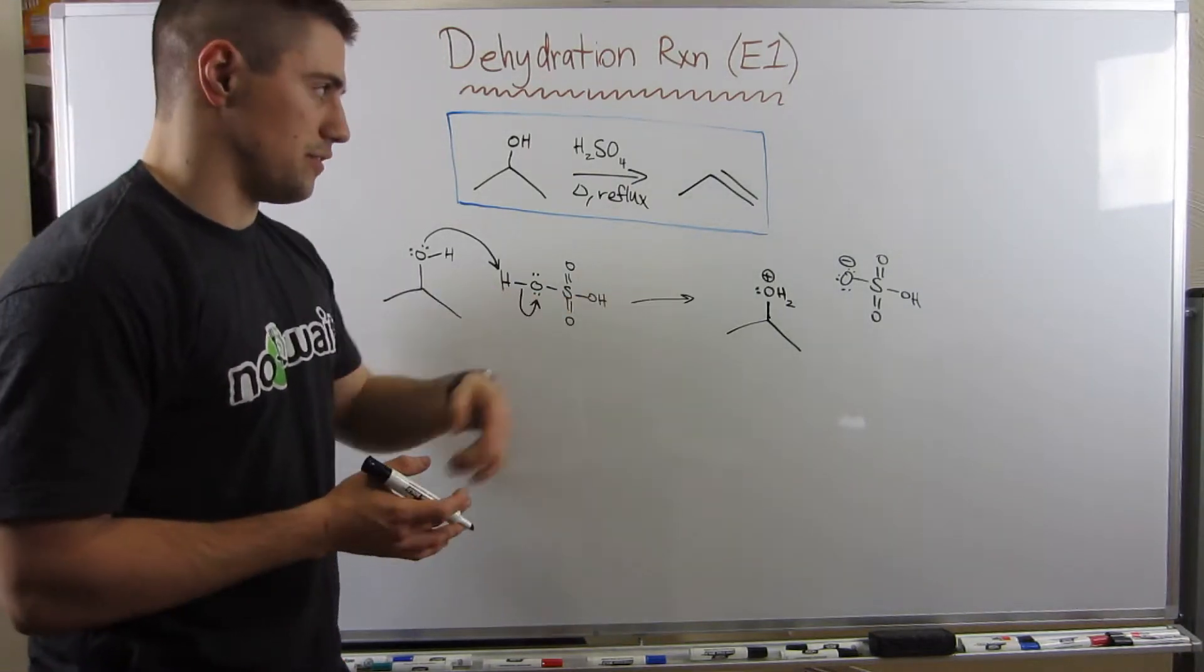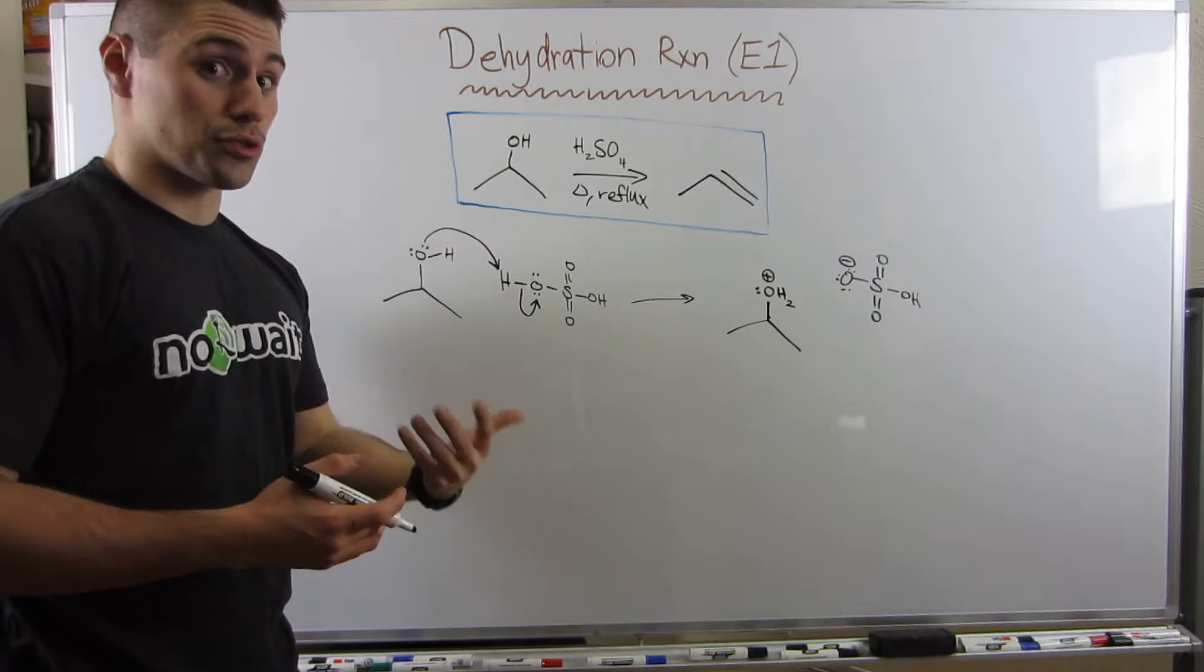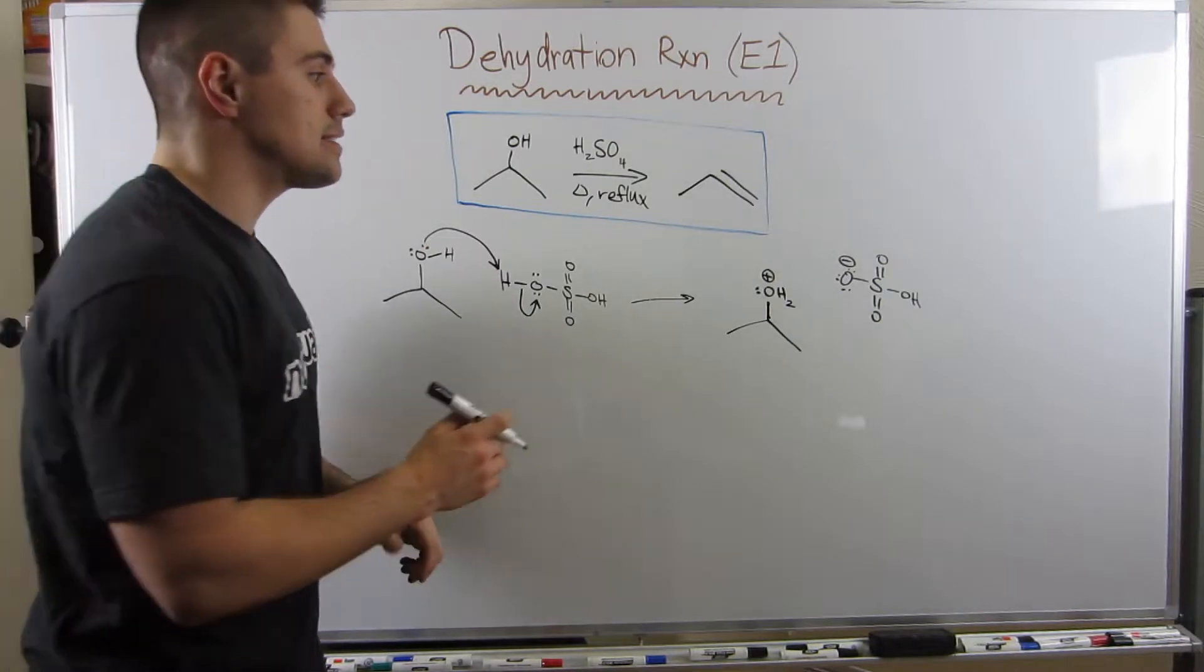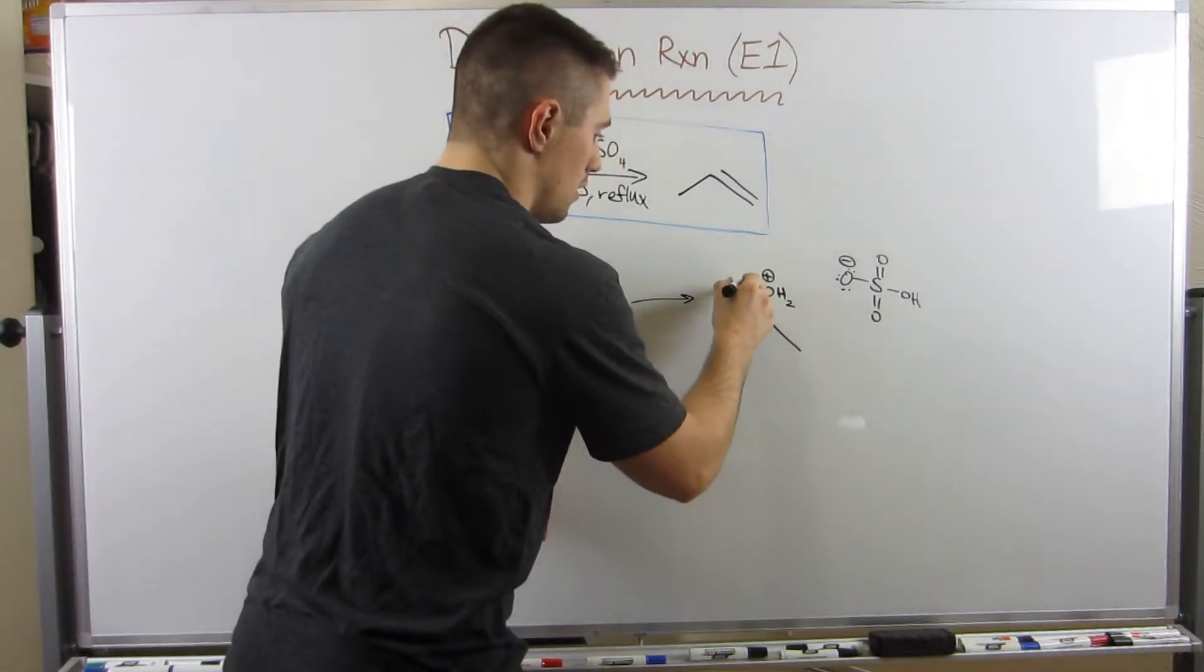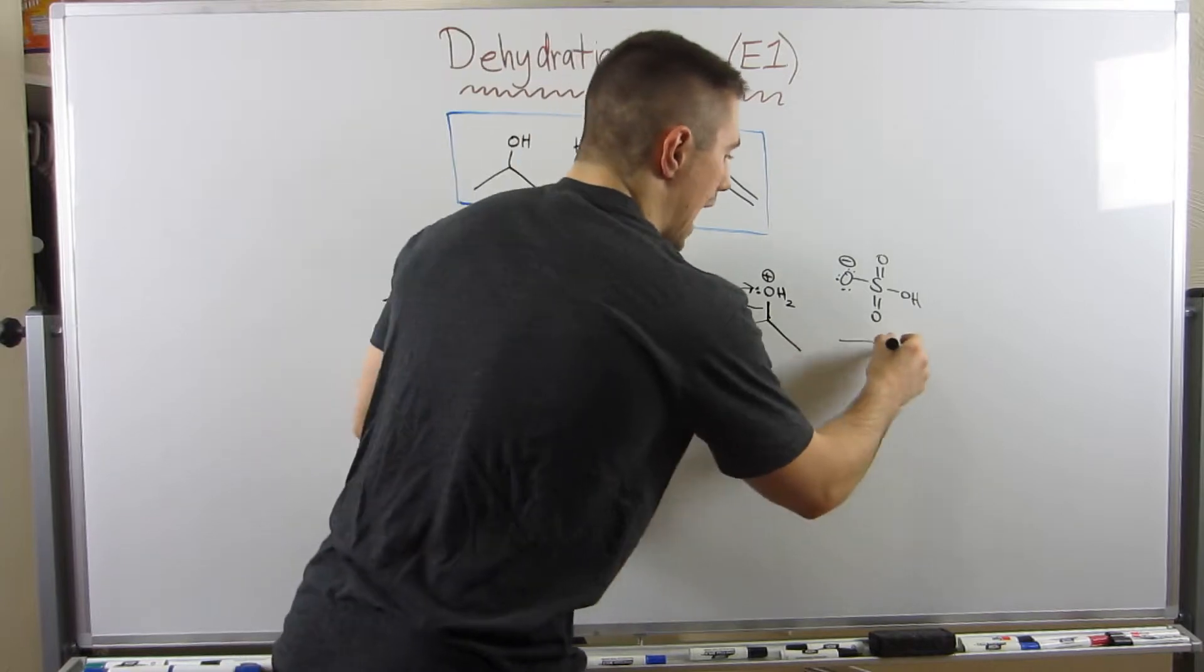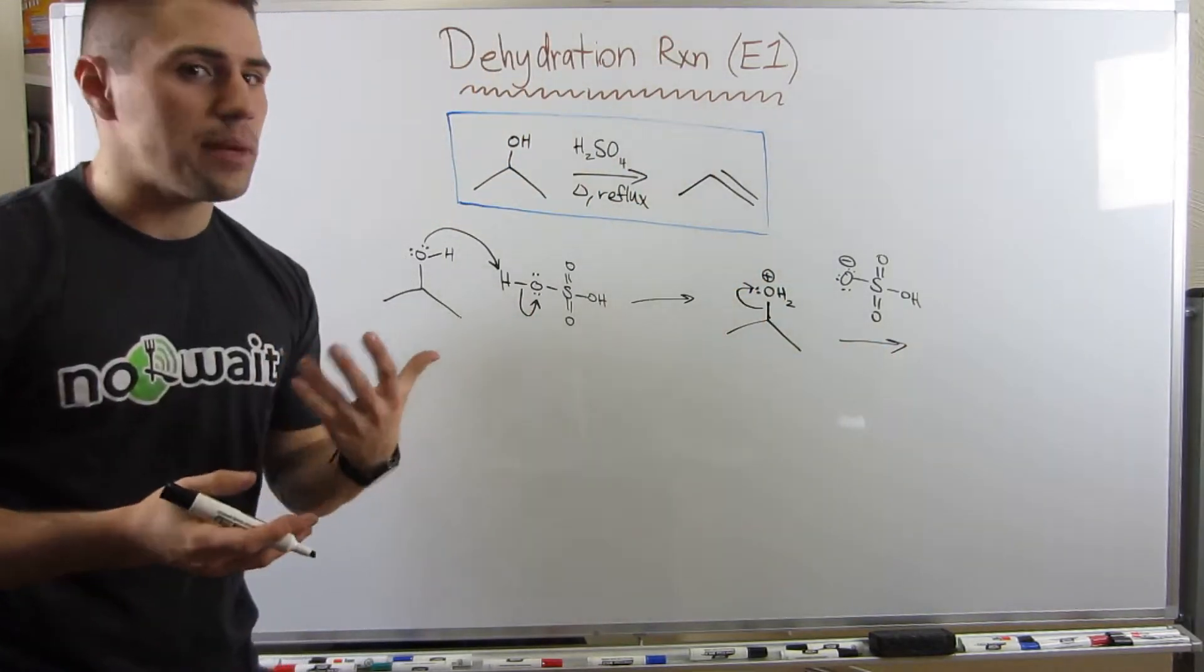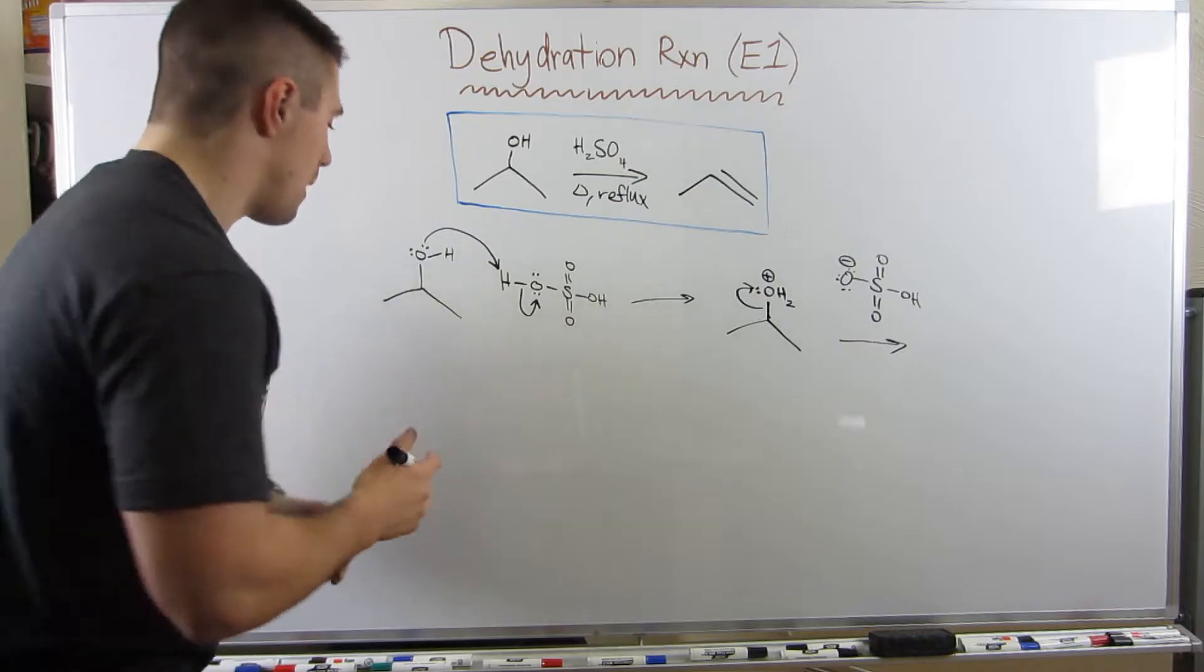And I'm going to keep tabs on the conjugate base of sulfuric acid. It is bisulfate, just sulfuric acid with one less hydrogen. So I'm going to push him off to the wayside. What's our next step? Well, this is a good leaving group. We're obviously in a polar protic environment. He's going to just leave.